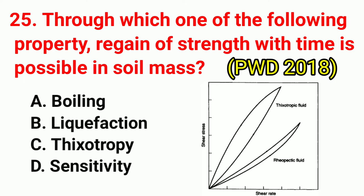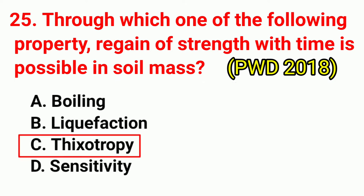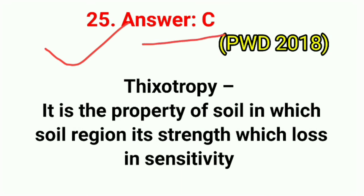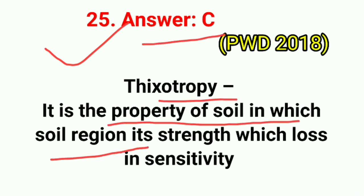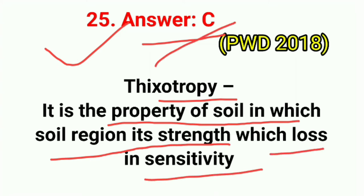Question No. 25. Through which one of the following properties is the regain of strength with time possible in a soil mass? Correct answer is option C: thixotropy. Thixotropy is the property of soil in which soil regains its strength after losing it due to sensitivity.